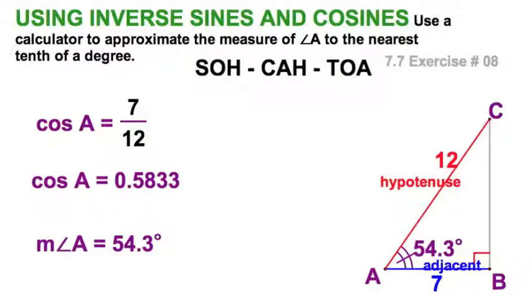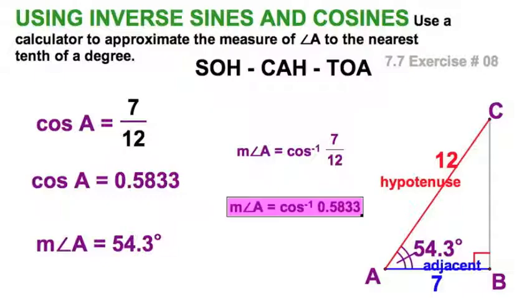Now, we could have written it the other way, and consistent with the book. The measure of angle A is the inverse cosine of 7 over 12. And therefore, it's the inverse cosine of this decimal. And we get the same thing.